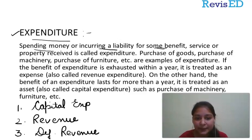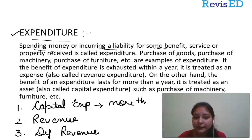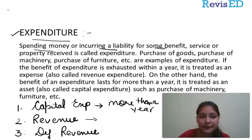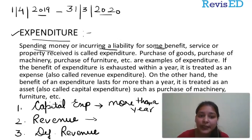Capital expenditure is that expenditure which is going to provide us benefit for more than a year — for more than one accounting period. An accounting period starts with 1st April, let's say 2019, and ends the next year on 31st March, let's say 2020. If we have an expenditure within this accounting period,